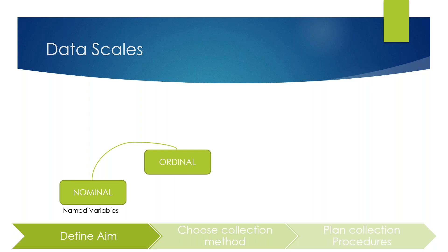For example, when giving a review for a website, you might see a question like 'How likely are you to recommend this website to your friends?' with a scale from 'Strongly Agree,' 'Agree,' 'Neutral,' 'Do Not Agree,' to 'Strongly Disagree.' That is ordinal data — a named category with an ordered representation, like a level of satisfaction with a product.